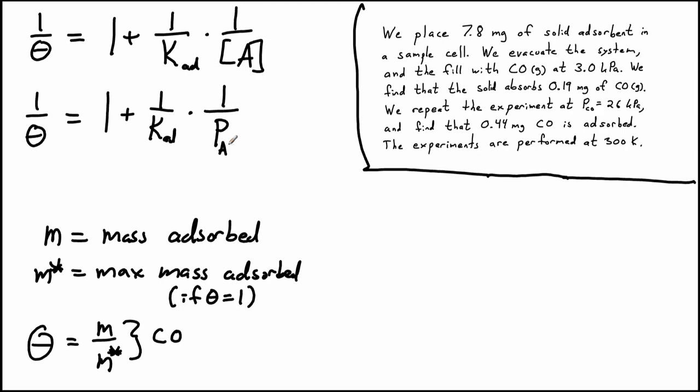That's still going to be hard for us to plot. We don't know what the surface coverage is. How are we going to measure that? So we're going to come up with a way to adapt this to make it plottable. So what we're going to do is say M is the mass of adsorbed carbon monoxide, and M star is the maximum possible amount of adsorbed carbon monoxide. And the second thing is not measured, but we'll figure out a way to get rid of that in just a second.